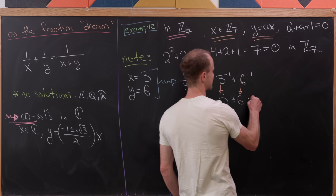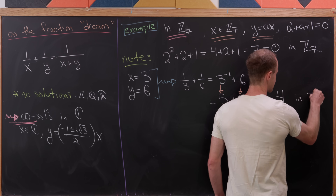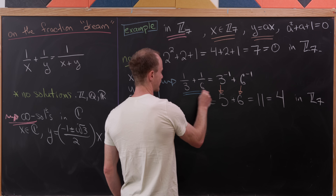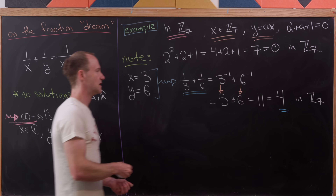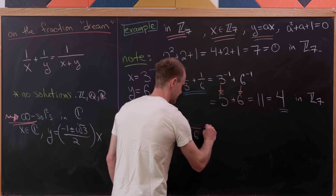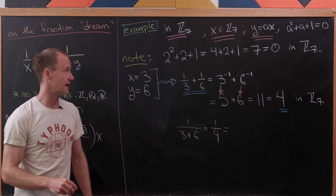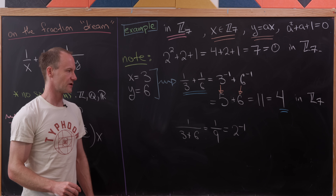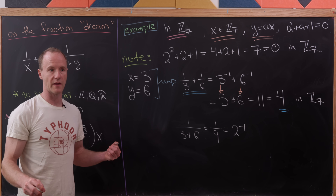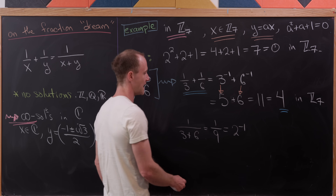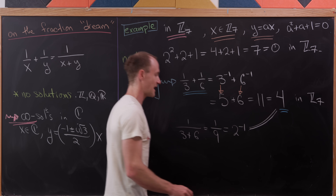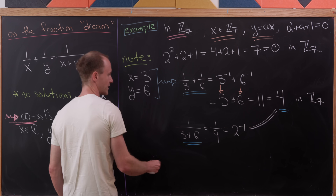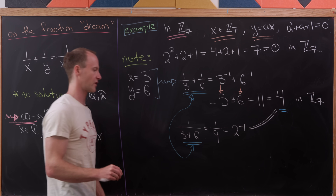Now 5 + 6 = 11 = 4 inside Z7. So 1/3 + 1/6 = 4. Comparing with 1/(3+6) = 1/9: since 9 = 2 in Z7, we need 2⁻¹. And 2⁻¹ = 4 in Z7 because 4 × 2 = 8 = 1 (mod 7). So 1/3 + 1/6 = 1/(3+6), completing our equation in Z7.